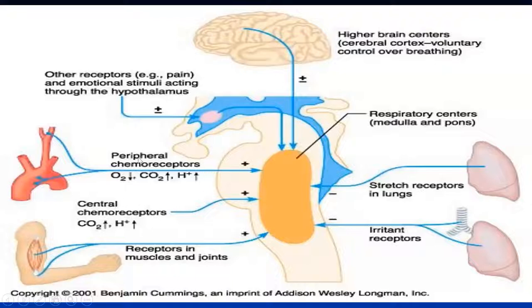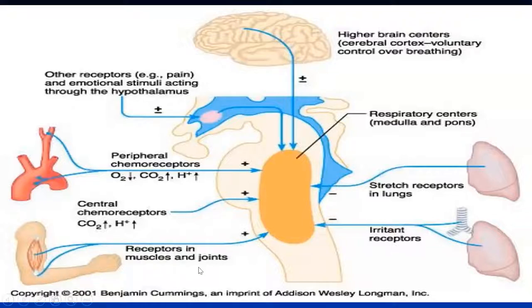We have central and peripheral chemoreceptors. The central chemoreceptors on the surface respond to CSF pH and carbon dioxide levels. This is why we shouldn't use bicarbonate to correct severe acidosis immediately — you may have paradoxical central acidosis through the effect on these chemoreceptors.